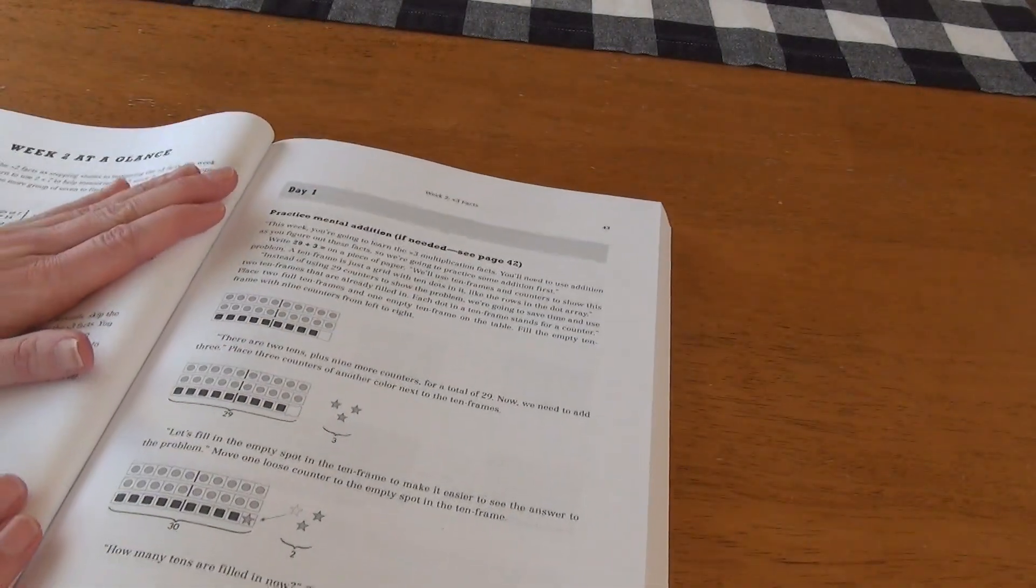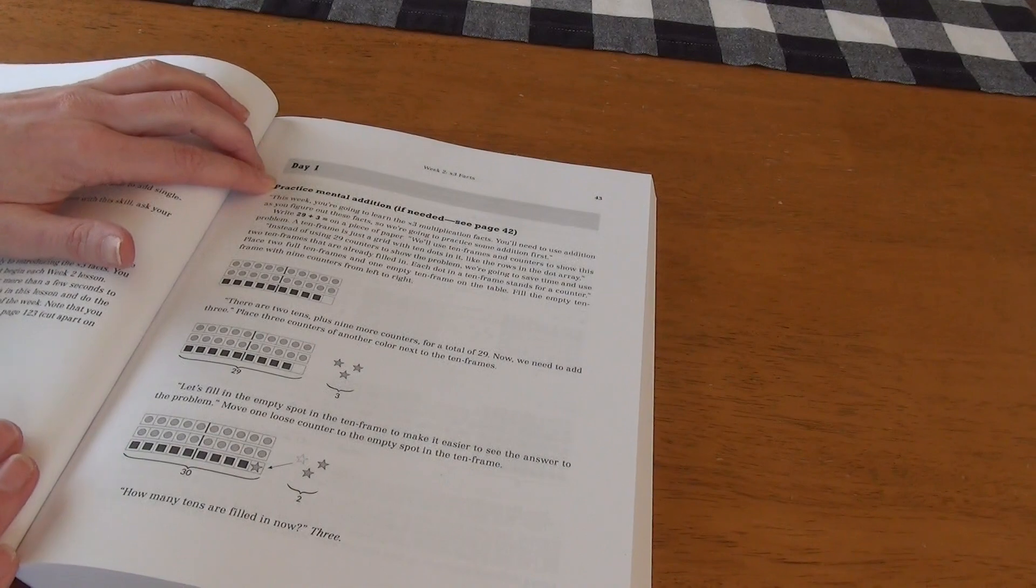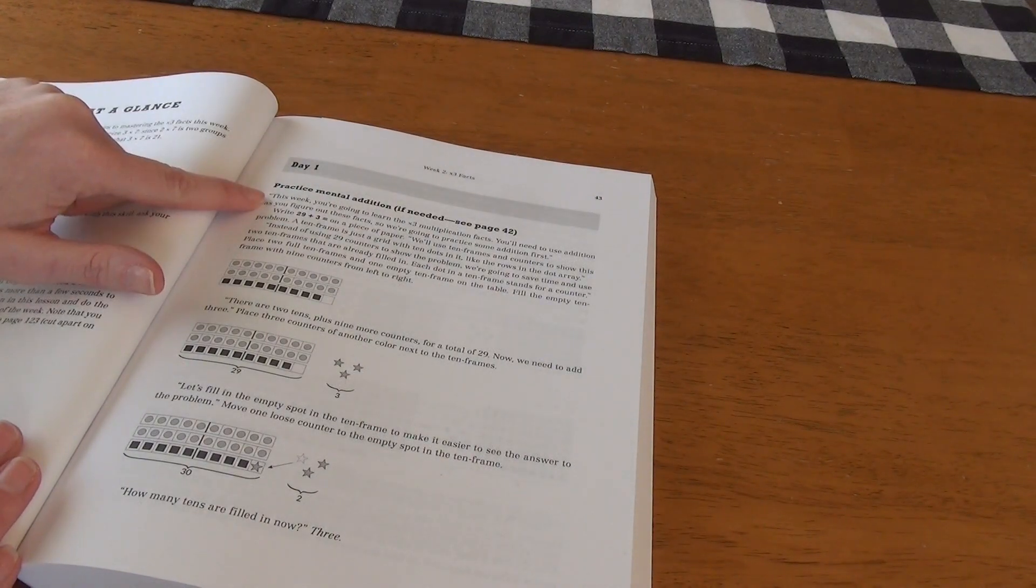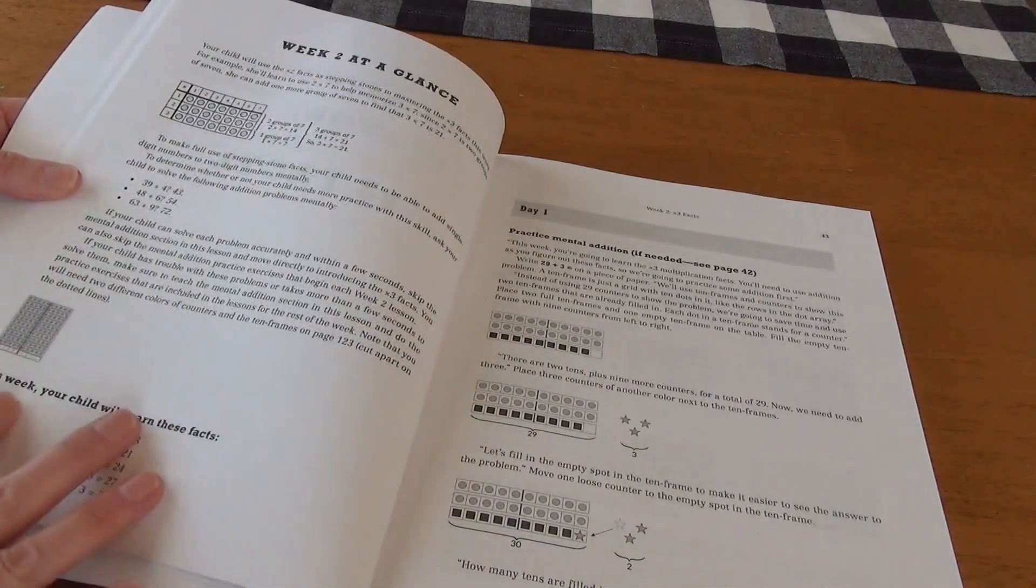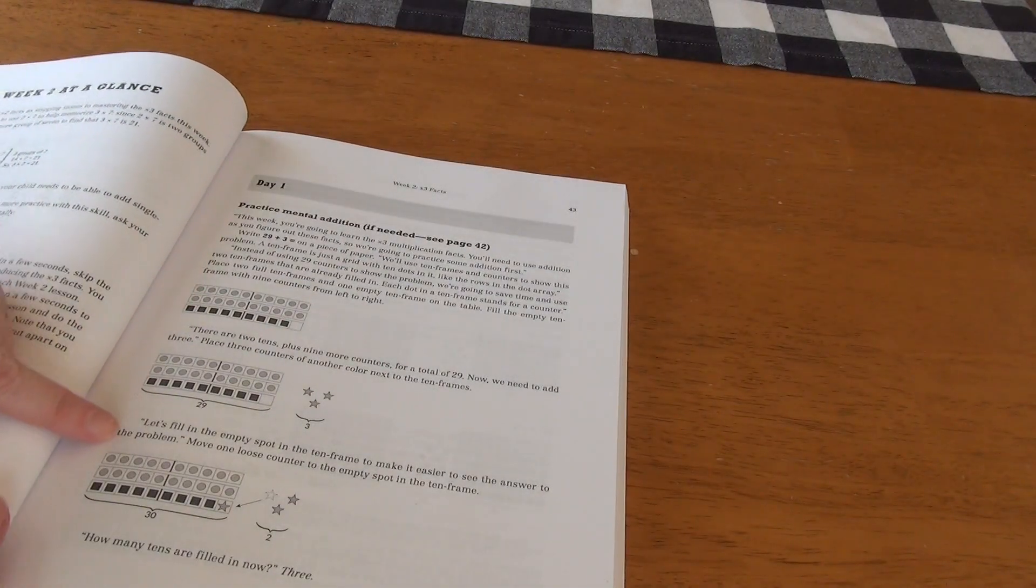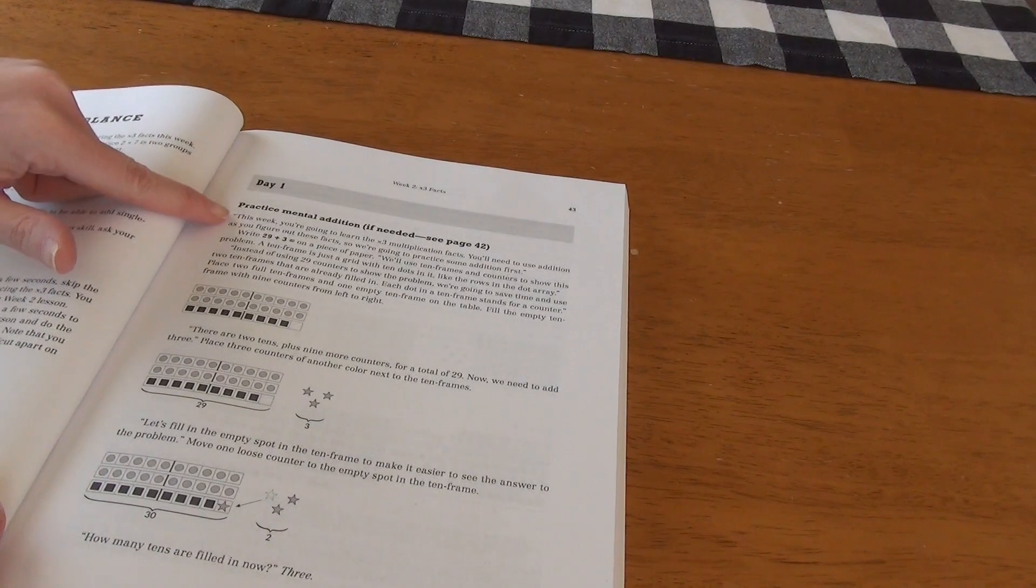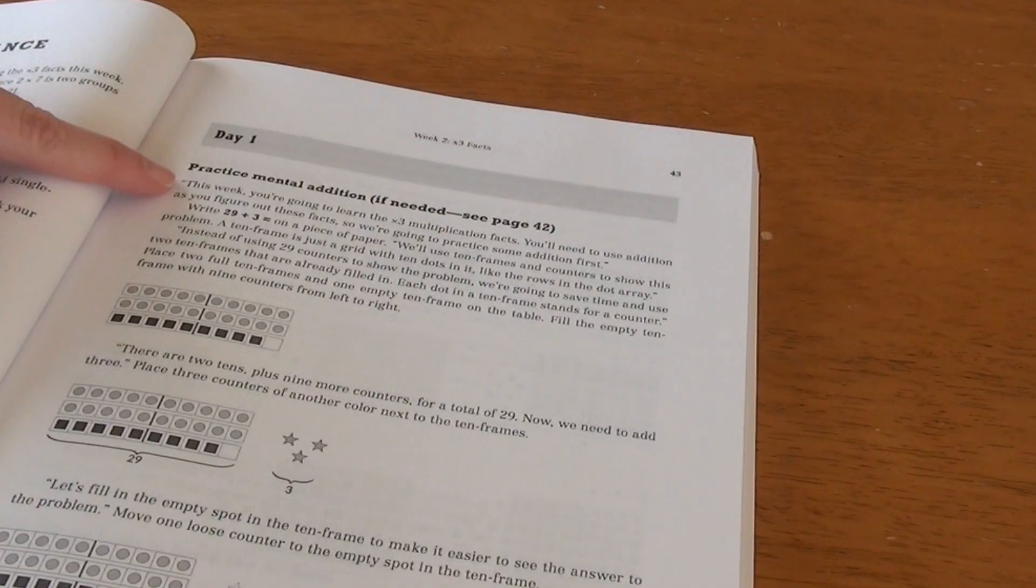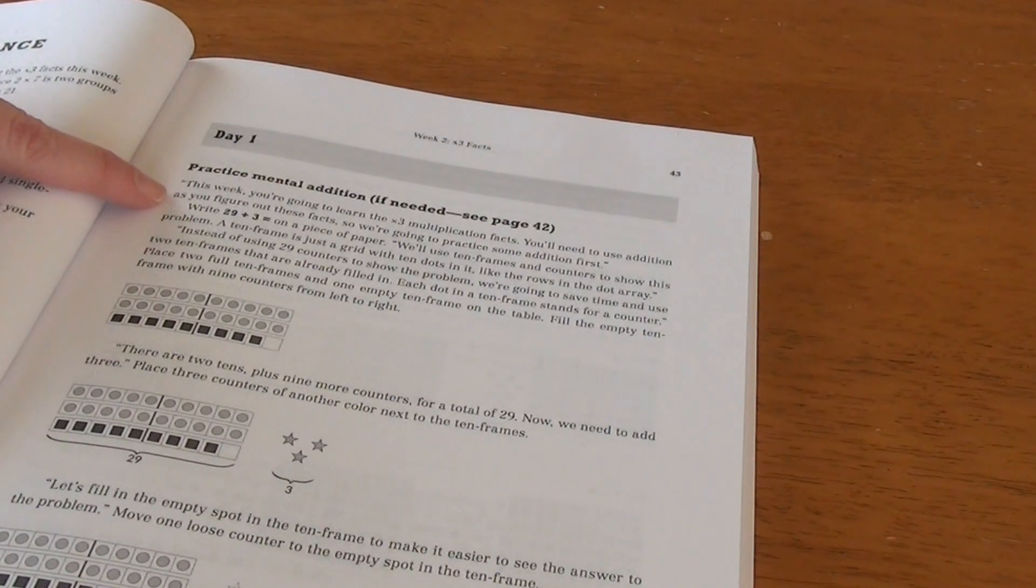So day one, we are doing the practice mental addition. If needed, see page 42, which is our week at a glance here. As you can see, it is very, very scripted. So you pretty much just read this off of the page. It says, this week, you're going to learn the times three multiplication facts. You'll need to use addition as you figure out these facts. So we're going to practice some addition first. Then it tells you to write 29 plus three on a piece of paper.